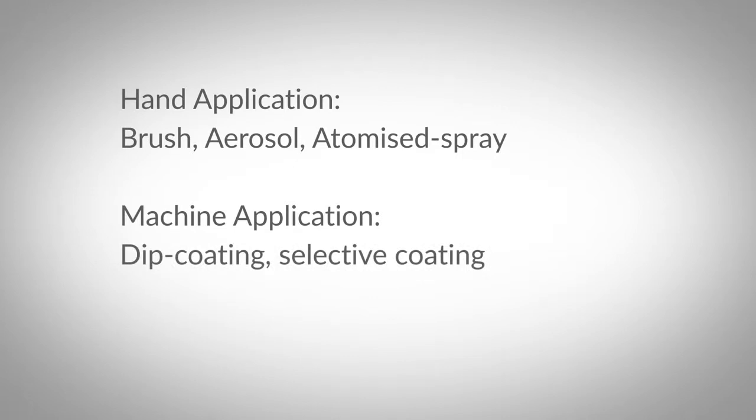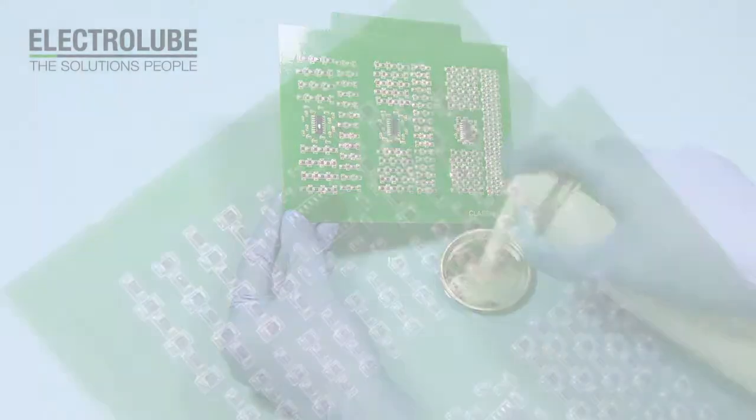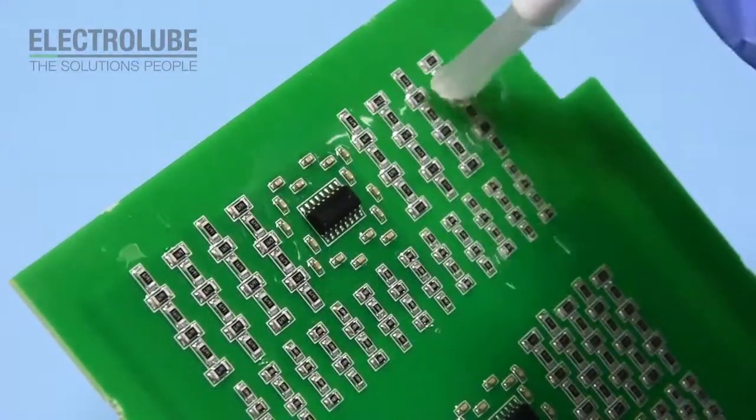Or automated dip coating and selective coating machine. To avoid outside contaminants in any application method, we would usually advise cleaning the PCB before coating and ensuring your workspace is clean and well ventilated.